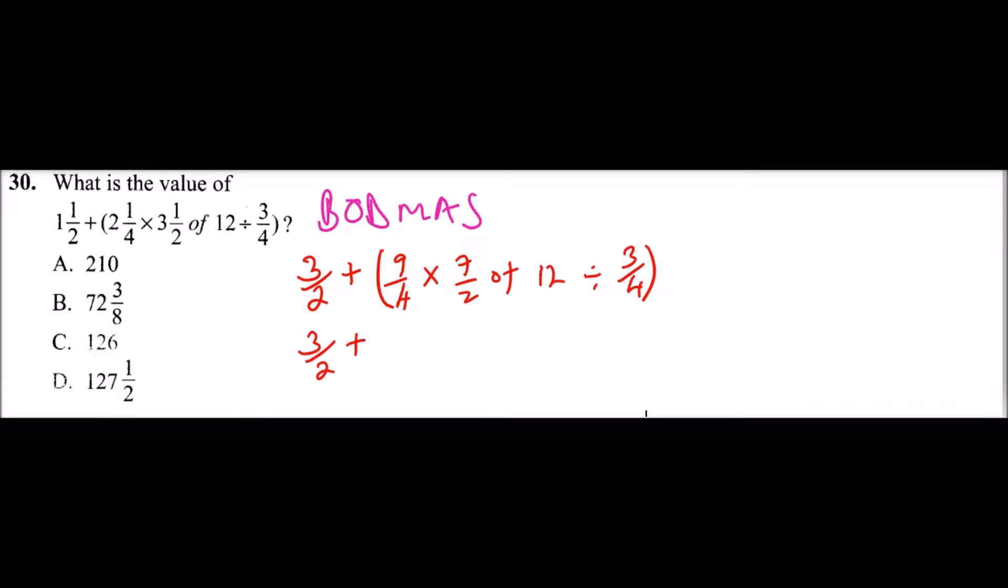So this will be 3/2 plus... when you start with 'of', you have 9/4 multiply by... 'of' implies multiplication, so you can simplify by 6. When you multiply 7 × 6 you get 42. Then you divide by 3/4. We have dealt with 'of', so we go to division.